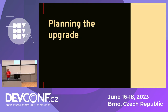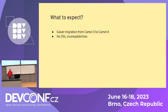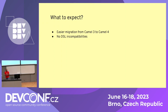I hope by this point I've sold you on the idea of Camel 4 and you are excited about upgrading. The final version is not out yet, but we are already working on a release candidate and have a few milestones available. The migration from Camel 3 to Camel 4 should be much easier than it was from Camel 2 to Camel 3 — we are aiming for a drop-in replacement. You should not expect any DSL incompatibilities. Camel has a quite good track record of retaining backwards compatibility, and it should not be different this time.